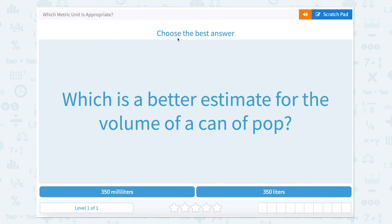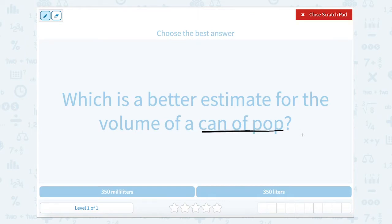Which metric unit is appropriate? Choose the best answer. Which is a better estimate for the volume of a can of pop? Or a can of soda? A small can, you might look at it like this.